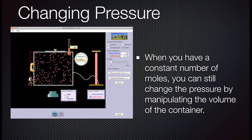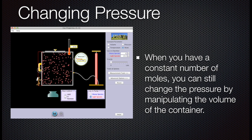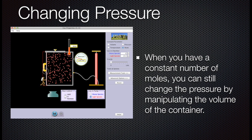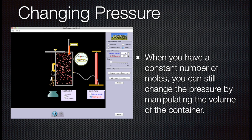There are other ways you can change pressure. If you have a constant number of moles, you can still change the pressure by manipulating the volume of the container. Notice as we squish the container, the molecules move faster and they hit the sides more frequently, creating more force.